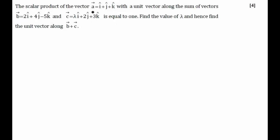In this question, we see that there are three vectors: A vector, B vector, and C vector. From the first statement of the question, we understand that the dot product of A with the unit vector along the sum of vectors B and C is equal to 1. Using this information, first of all, I have to find the value of lambda.